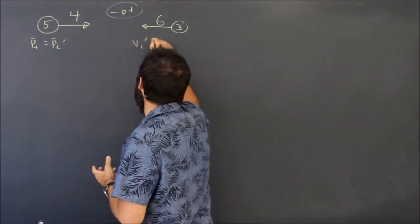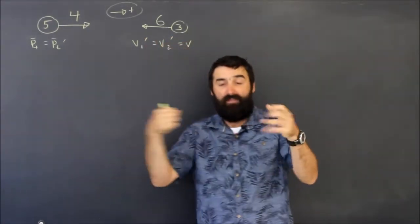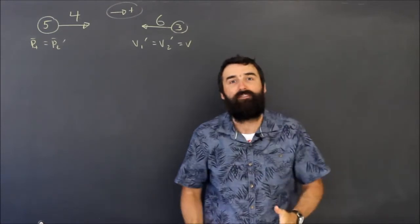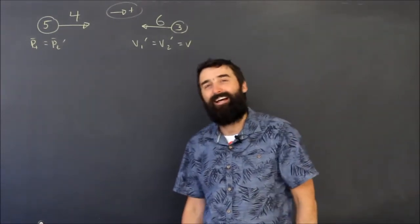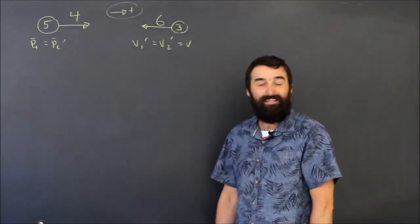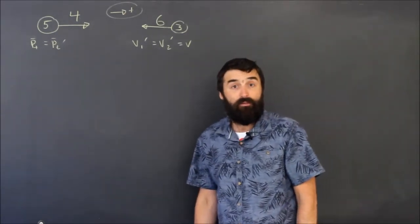then we know that V1 prime is equal to V2 prime. Let's just call it V, the speed of the two smushed together afterwards. And the thing about this kind of collision, which is called perfectly inelastic, is that it is by far the easiest type of collision because all we need to do is look at the momentum. So let's do that.